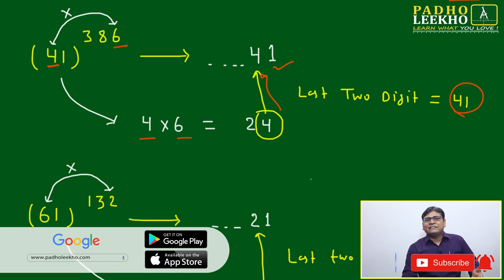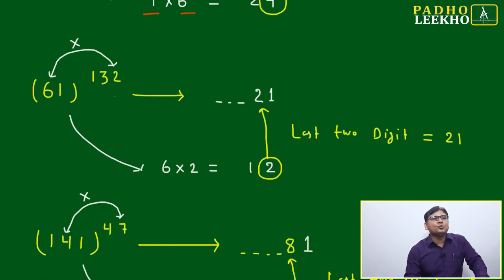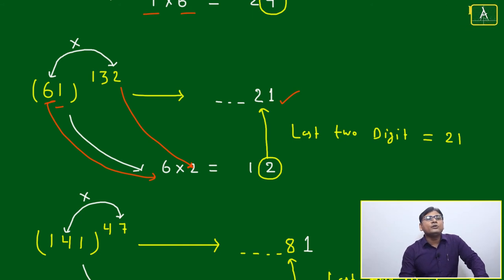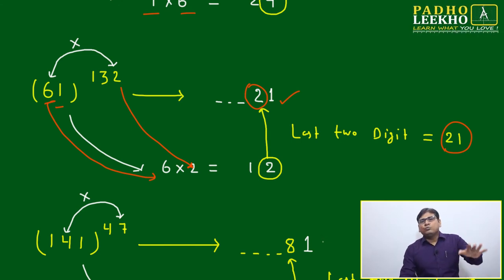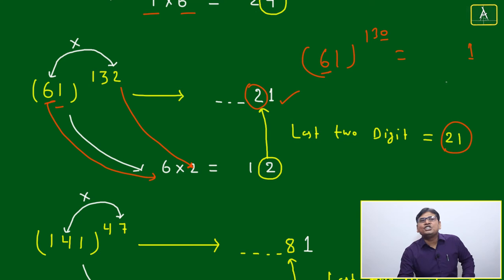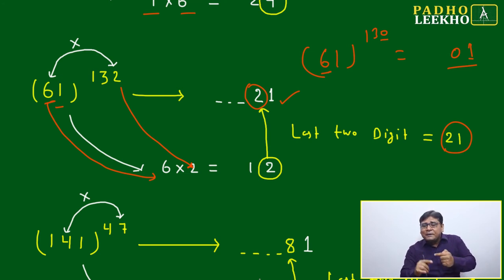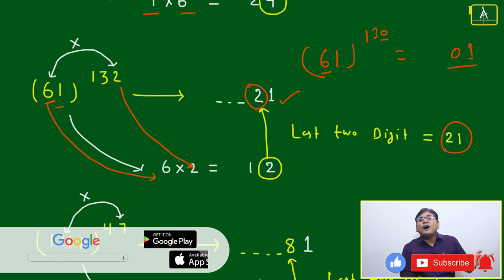Example: 61 to the power 32. The number ends with 1, so unit digit is 1. Second last digit of base (61) is 6. Unit digit of power (32) is 2. Multiply: 6 × 2 = 12. Take unit digit: 2. Last two digits are 21. Note: if the power ends with 0, for example 61^130, then 6 × 0 = 0, giving last two digits of 01. So the only possible last two digits for numbers ending in 1 are: 01, 11, 21, 31, 41, 51, 61, 71, 81, and 91 — exactly ten possibilities.